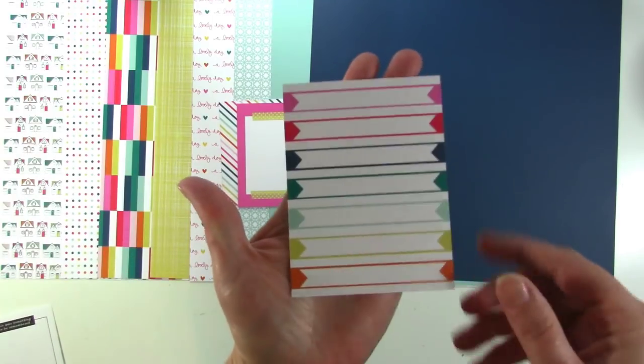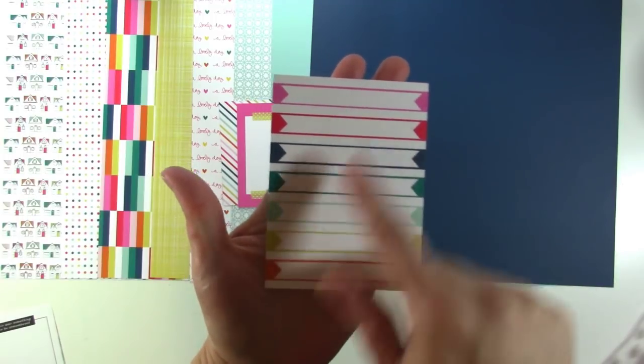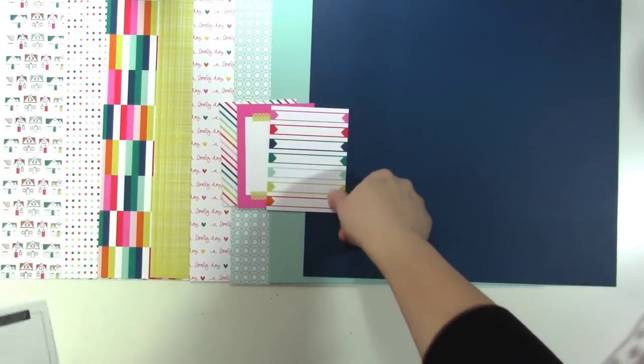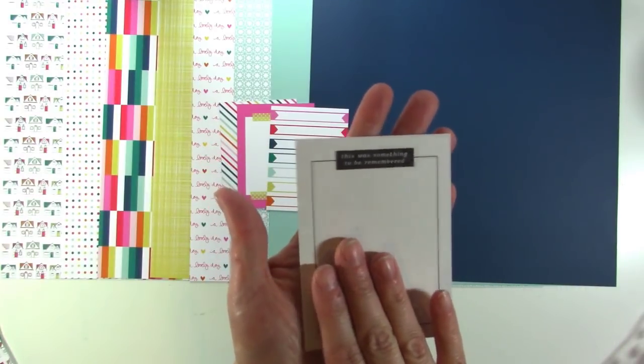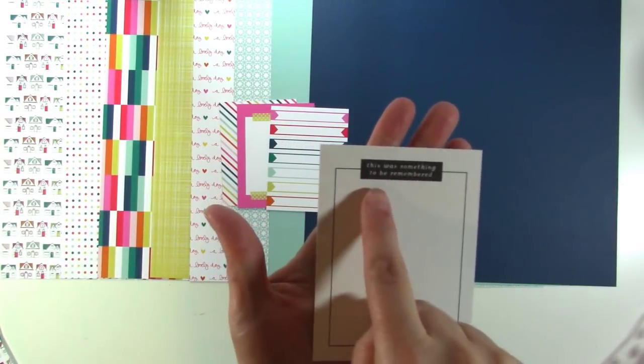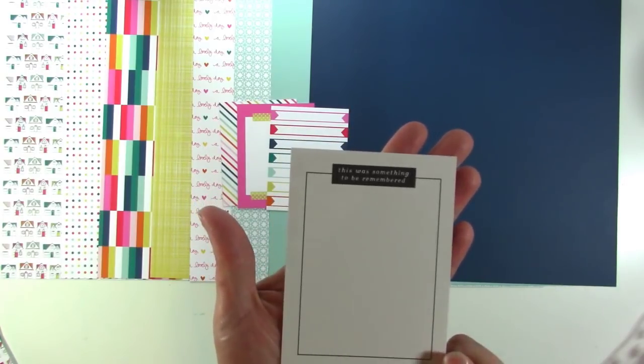We have this cool one, which you could cut this one up and use these as labels, but I think this is a cool way to make a list or do your journaling on here. And then the back side of that one, these kind of cards are my favorite to use in pocket scrapbooking because I love the black and white. But it says this was something to be remembered, so you could type something in there or you could even put a photo in there, that'd be cute.